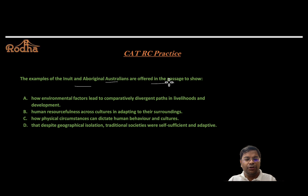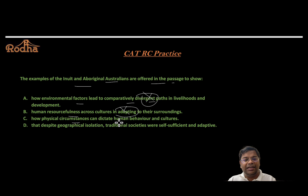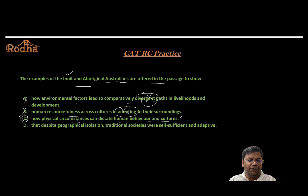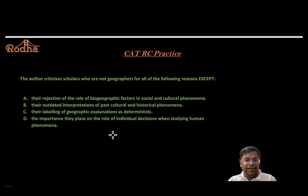Next question: 'The examples of the Inuit and aboriginal Australians are offered in the passage to show...' I'm looking for a close paraphrase of: geographic factors influence human phenomena and characteristics. Option A: environmental factors led to comparatively divergent paths and livelihoods — not about divergent paths. Option B: human resourcefulness across cultures in adapting — the passage wasn't about adaptation. Option C: how physical circumstances can dictate human behavior and culture — 'behavior' maps to phenomena, 'physical circumstances' maps to geographic factors. Final answer: option C.